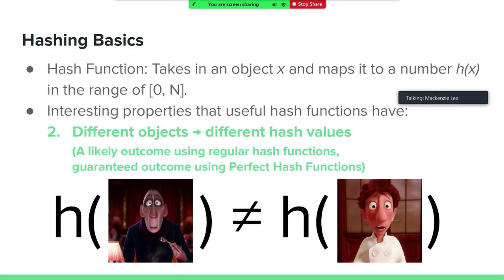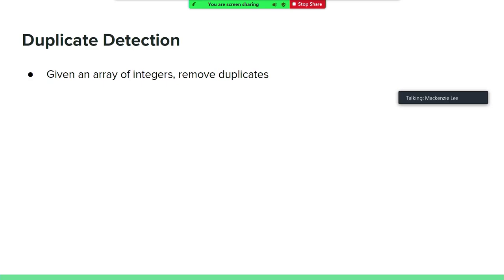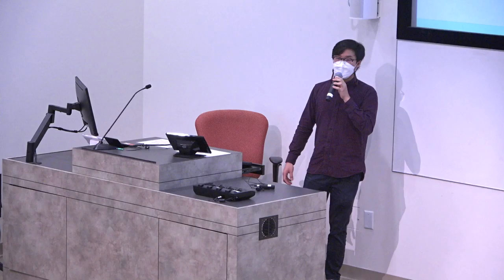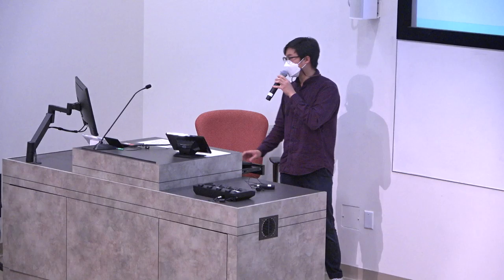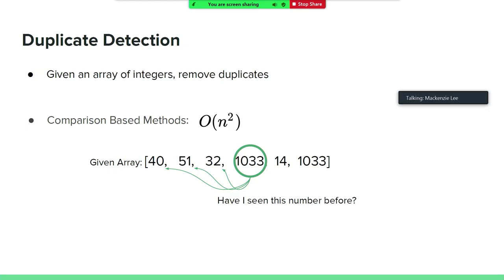How can we use this for search? We're going to look at an example where we can make hashing useful — the problem of duplicate detection. Given an array of numbers, detect and remove the duplicates. The most naive way to do this is a comparison-based method: as you look through each element in the array, you look at all the previous elements to see if you've seen it before. If you've seen it before, it's a duplicate — you mark it and remove it. In the worst case, for each of the elements, you'll have to look through the whole array, which means you're going to do on the order of n-squared number of computations, where n is the number of elements in the array.